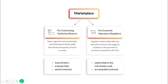CAs are the state, regional or local authorities and bodies governed by public law that procure goods, services or works. CAs issue tenders, evaluate bids and award contracts. EOs are supplier entities which offer the execution of works, the supply of products or the provision of services as required by the CAs. EOs submit bids to the CAs' tenders and are awarded contracts.